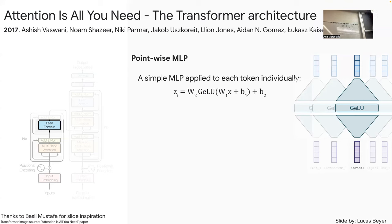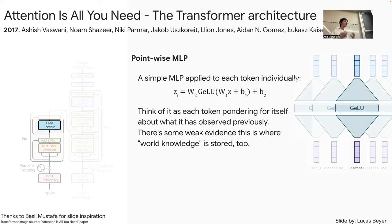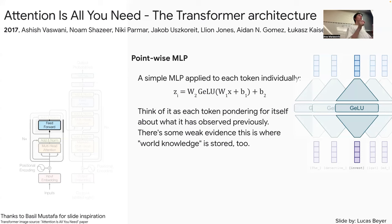Why do we have the feed-forward layer? We want that expressivity. One intuition offered is that each token 'ponders for itself' what it has observed from self-attention. There is also weak evidence that this is where world knowledge is stored in these models — an active research direction involves localizing factual knowledge (e.g., who is the current US president) in specific feed-forward layers so that such knowledge can be updated when it changes.